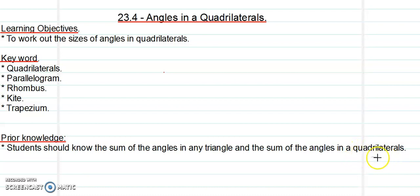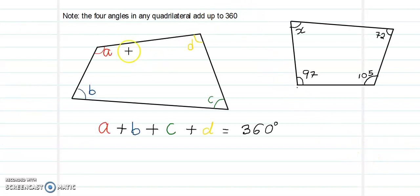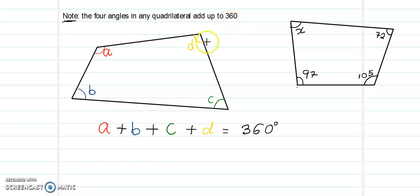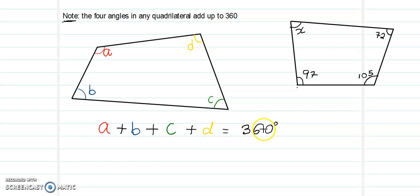The sum of angles in a quadrilateral will sum up to give 360 degrees. You have to note first of all that the four angles in any quadrilateral sum up to 360 degrees — any quadrilateral, be it a rhombus or any other. So in this quadrilateral we have A, B, C and D, and we know that A plus B plus C plus D is equal to 360 degrees.